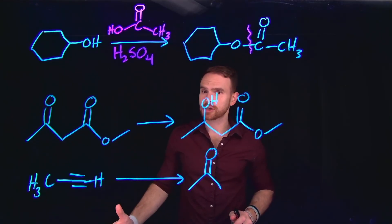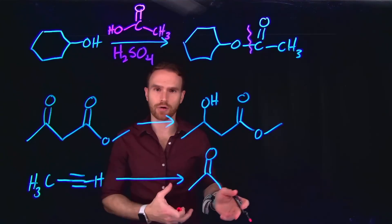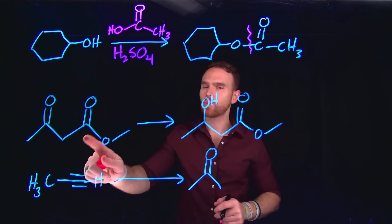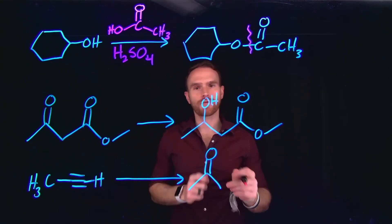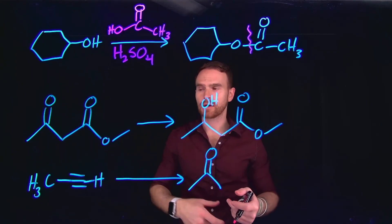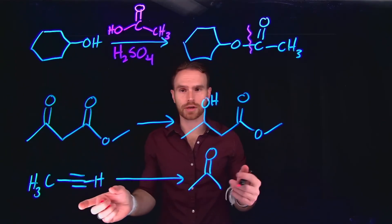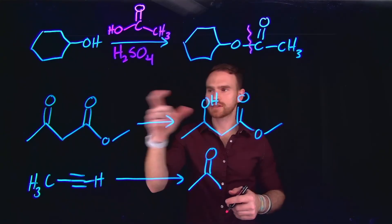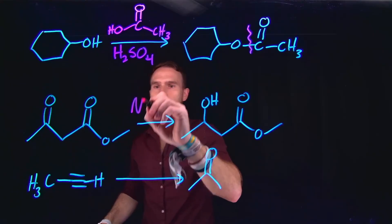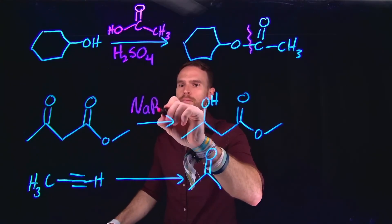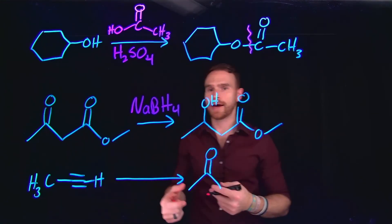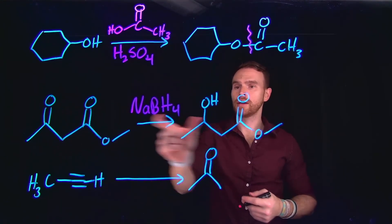The next reaction is the reduction of a carbonyl carbon to an alcohol. Importantly, we're only looking for selective reduction of the ketone — we don't want to do anything to the ester. We need to consider the milder conditions that will only selectively reduce the ketone and leave the ester unchanged. For that, we can use sodium borohydride, which will selectively reduce the carbonyl ketone to an alcohol.